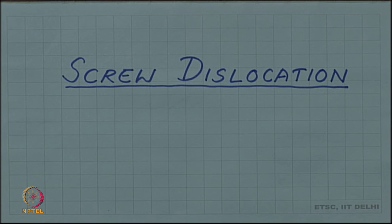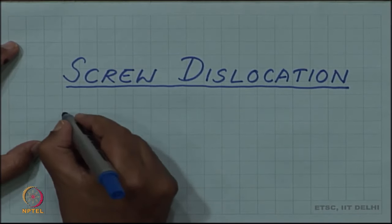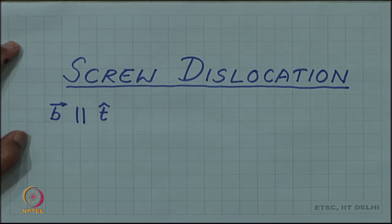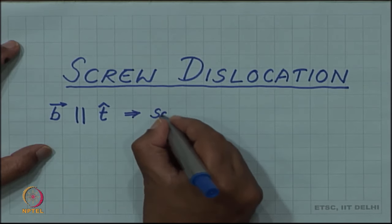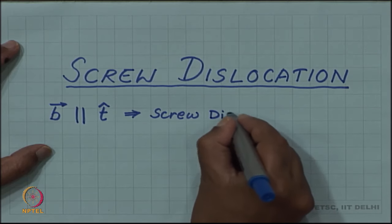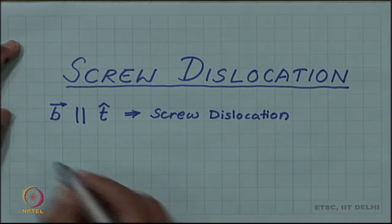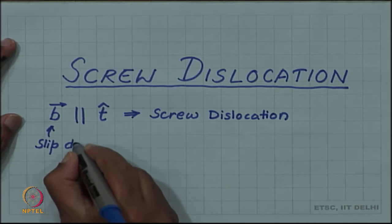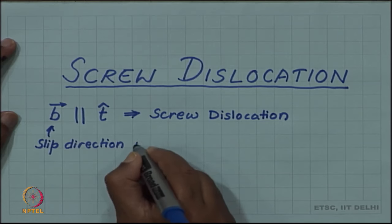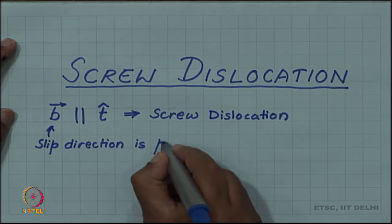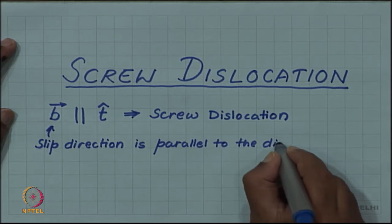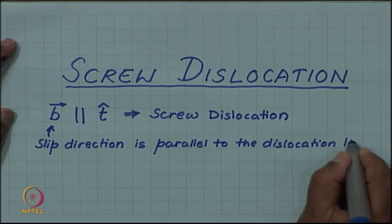Today we will discuss screw dislocation. We have already defined screw dislocation in terms of Burgers vector and the line vector. We said that if the Burgers vector and the line vector or the tangent vector are parallel, then we have a screw dislocation, which essentially means the Burgers vector is the slip vector. So the slip direction is parallel to the dislocation line.